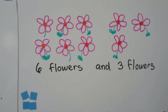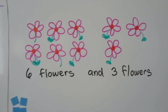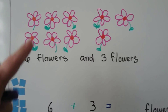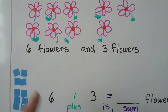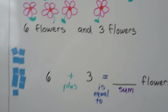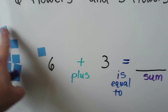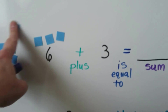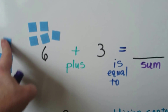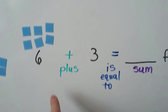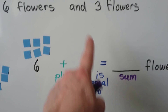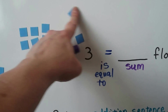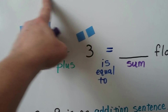Here we've got some flowers — six flowers and three flowers. We can use counters to represent the flowers. We get six counters: one, two, three, four, five, six. Plus three flowers: one, two, three.